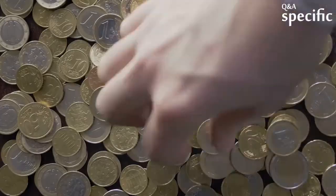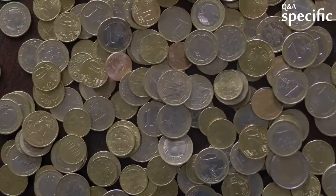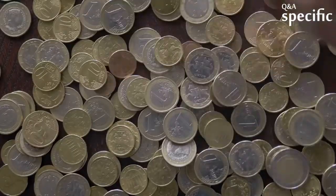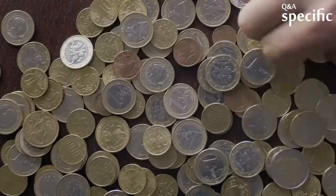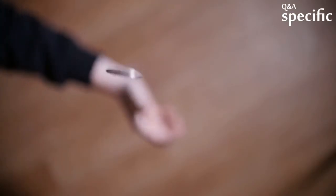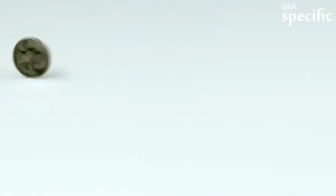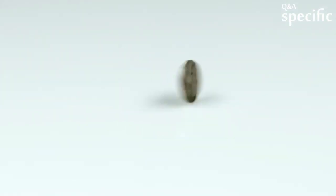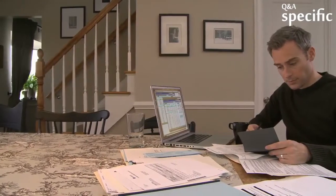In 1920, a $20 gold coin would buy a quality tailored man's suit of clothes. Today, that same $20 gold coin will still buy a quality tailored suit of clothes. The price of both the coin by weight in gold and the suit have gone up considerably. That is inflation.